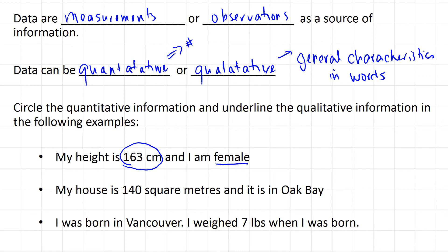In the second example, my house is 140 square meters. That is quantitative, and it is located in Oak Bay, so that's the general characteristics or description in words.